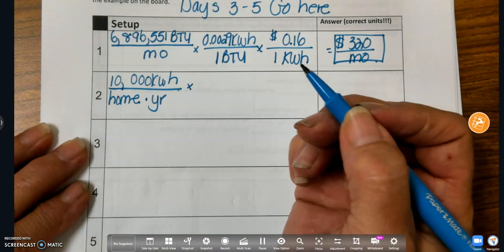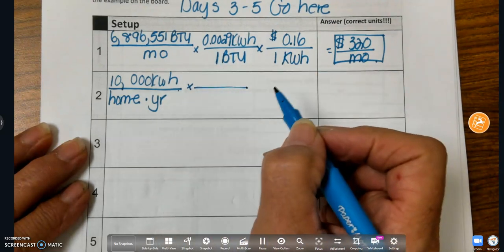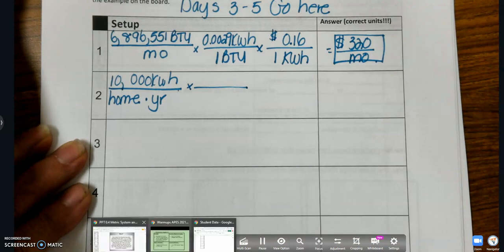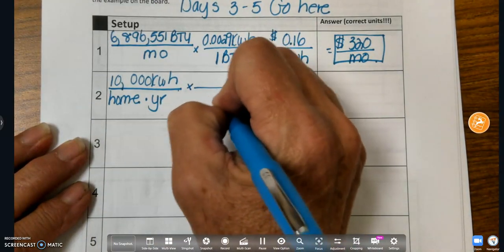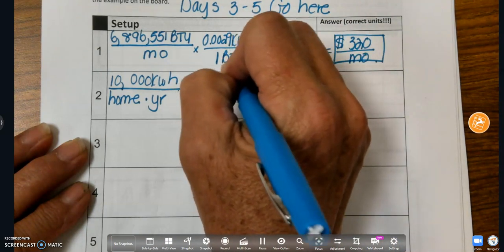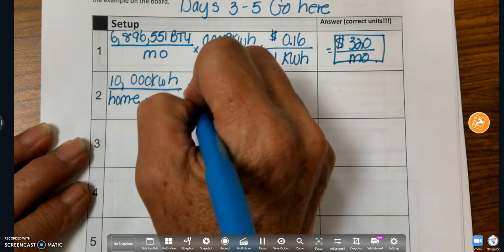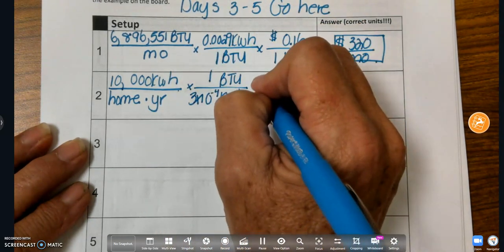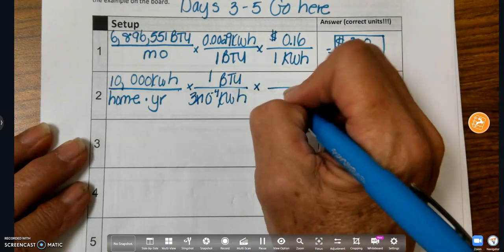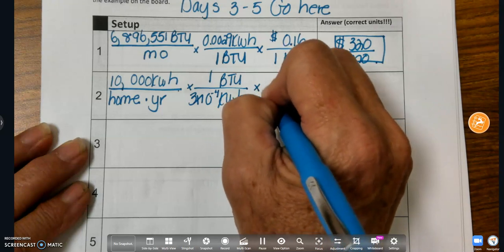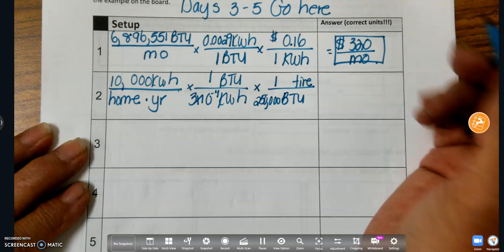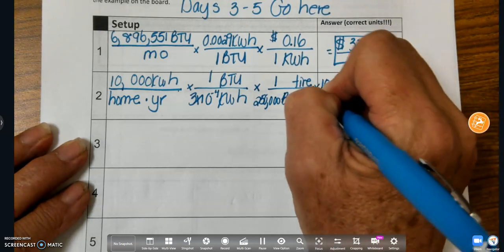Now, I don't want kilowatt hours. I want tires, so I'm going to walk. Now, I don't have a conversion which takes me to kilowatt hours. Let's look at the problem again. I don't have one that takes me from kilowatt hours to tires, but I can walk through that, through the BTU. So let's do that. So I'm going to drop my kilowatt hour. And I'm going to go to BTU. 3 times 10 to the minus 4 kilowatt hour is 1 BTU. And then I know from BTU I can get to tire. So BTU to tires, I can say it's 250,000 BTU for one tire. And I've got to multiply all of this by 10, because it's 10 homes. So that gives me 1,333 tires.